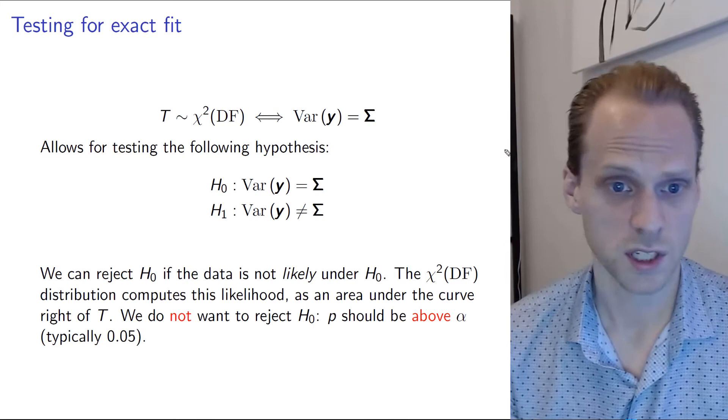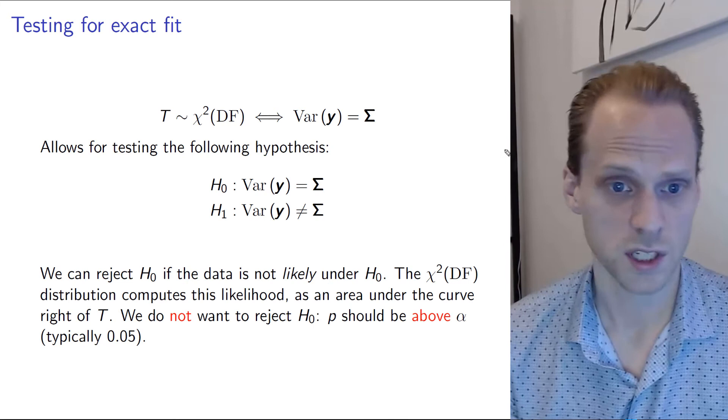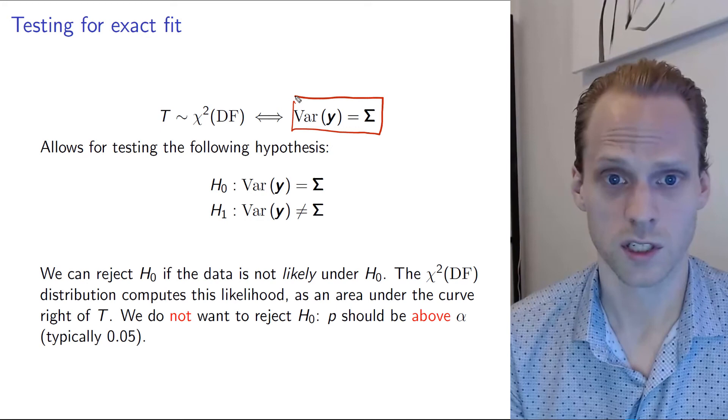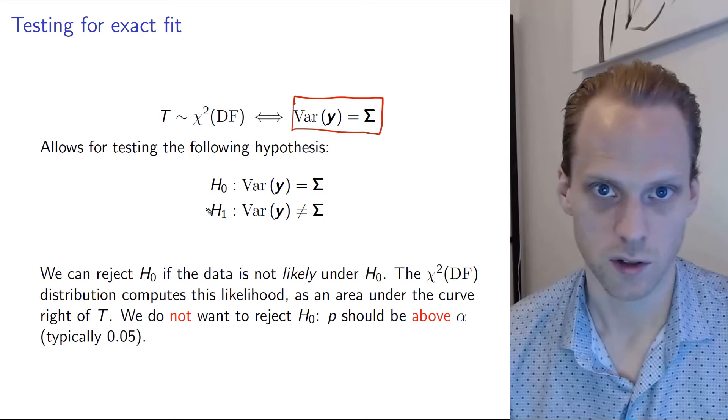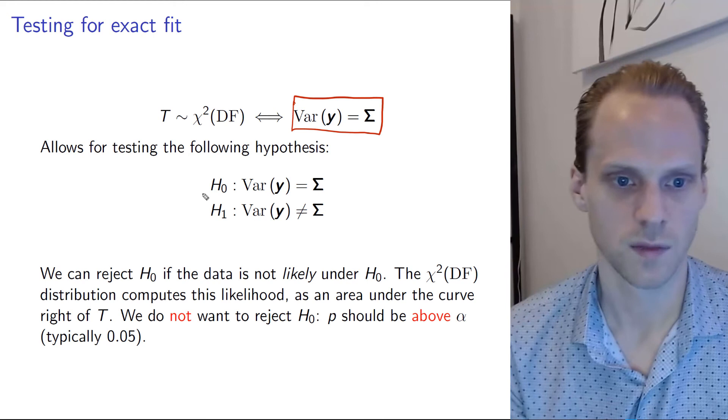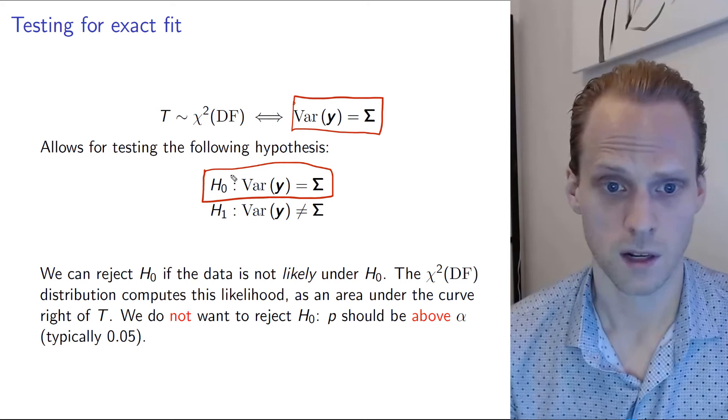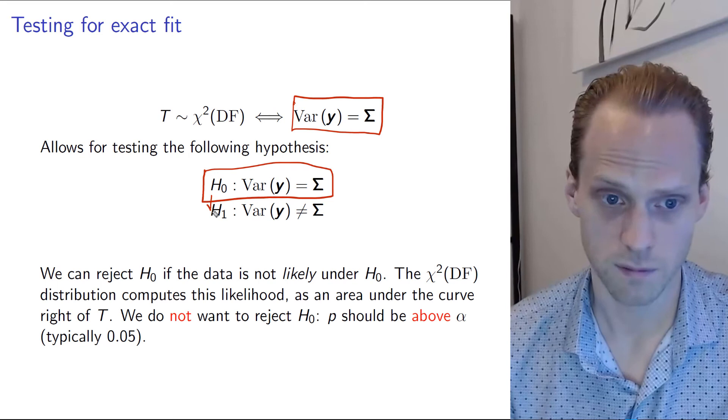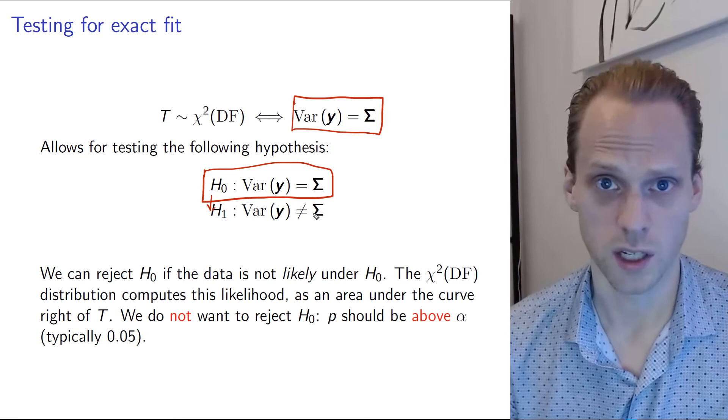Okay, so with this test statistic, we can test the hypothesis that the variance of y equals sigma. In fact, we can try to reject this hypothesis. So it's a bit of an inverse way of thinking that you normally do with significance testing. Here, our H0 is that the variance of y equals sigma. And we can try to reject that with the alternative hypothesis that the variance of y is not equal to sigma.